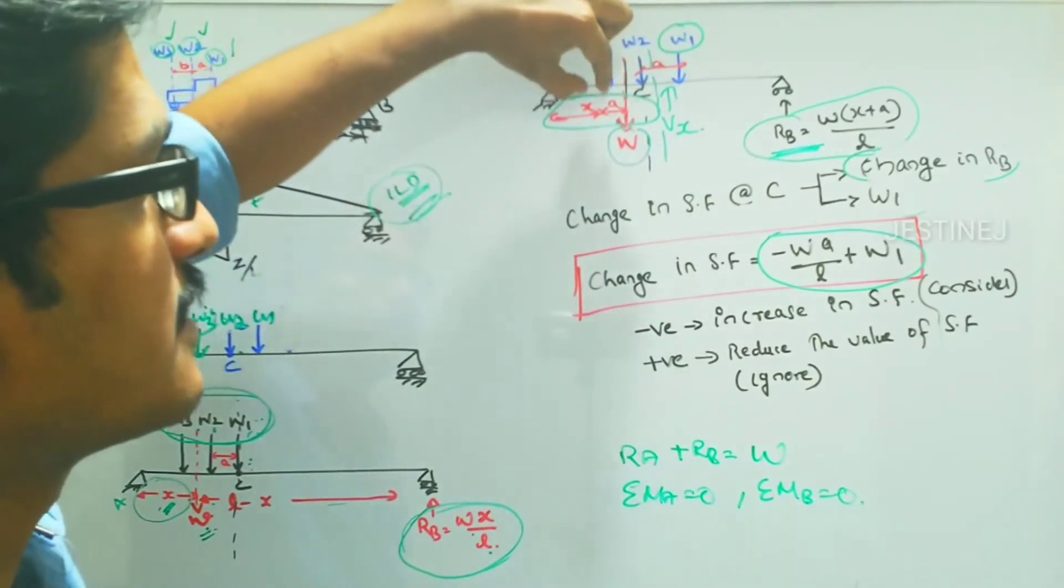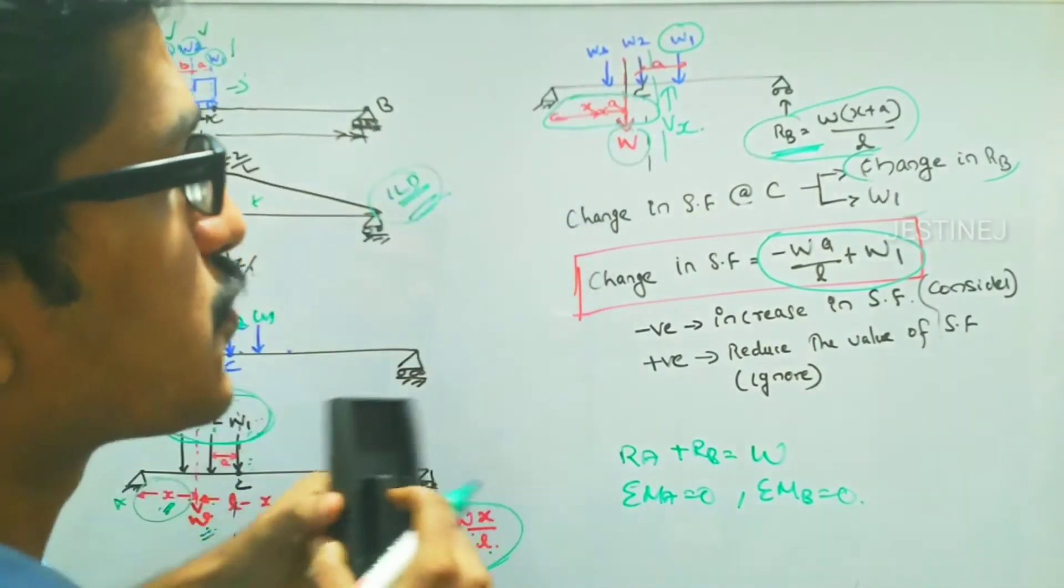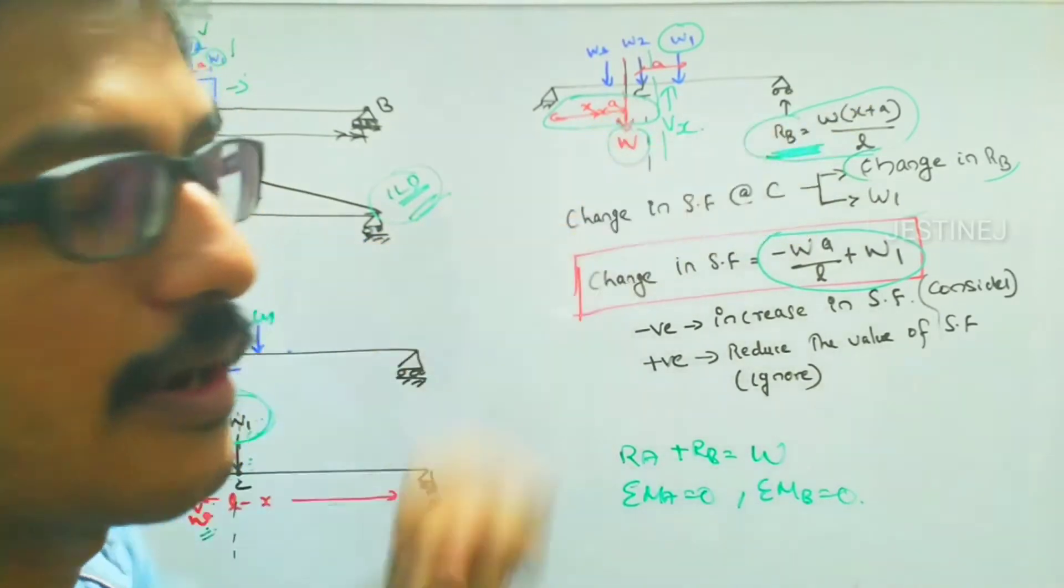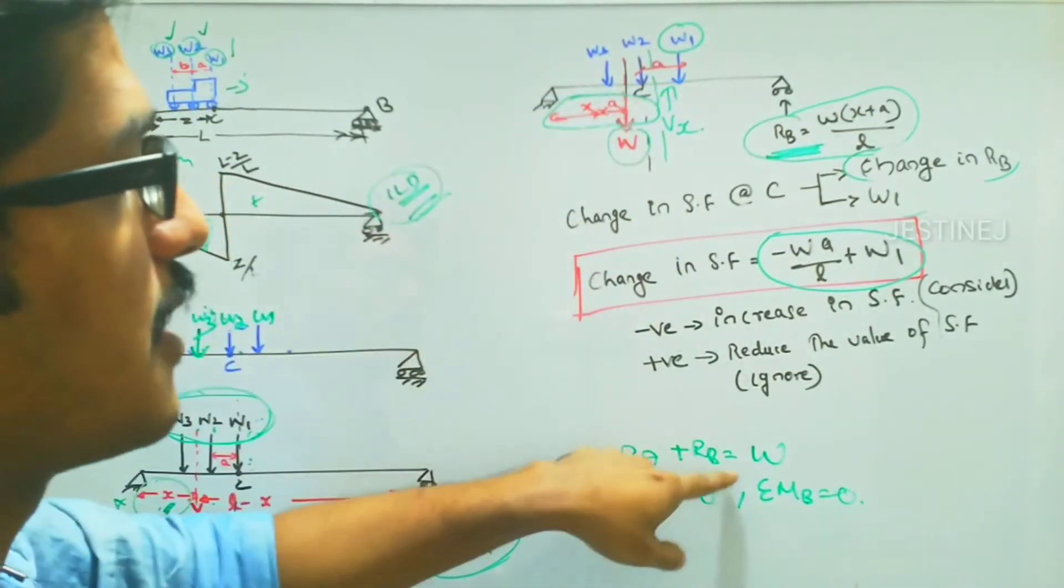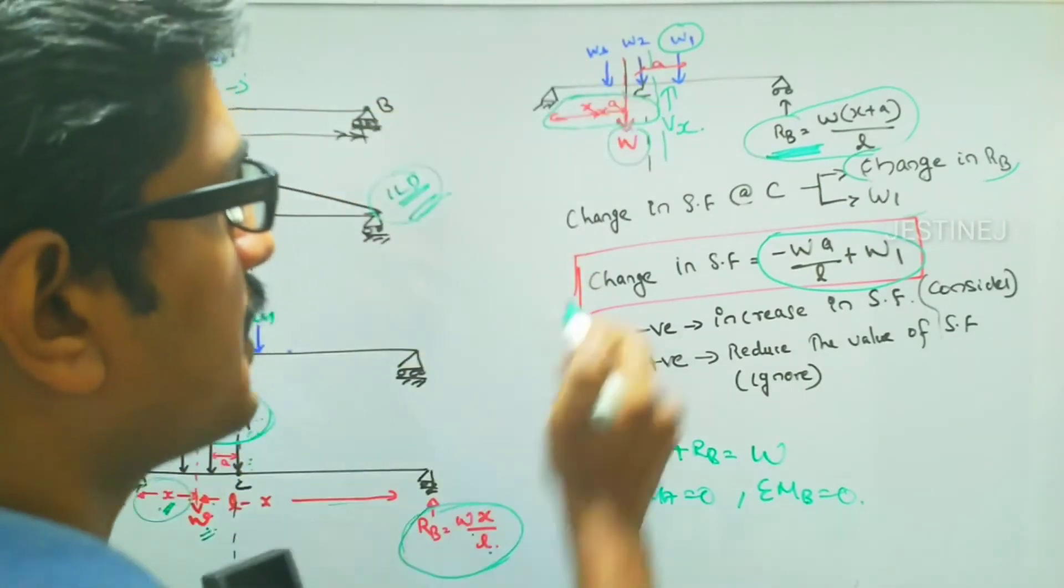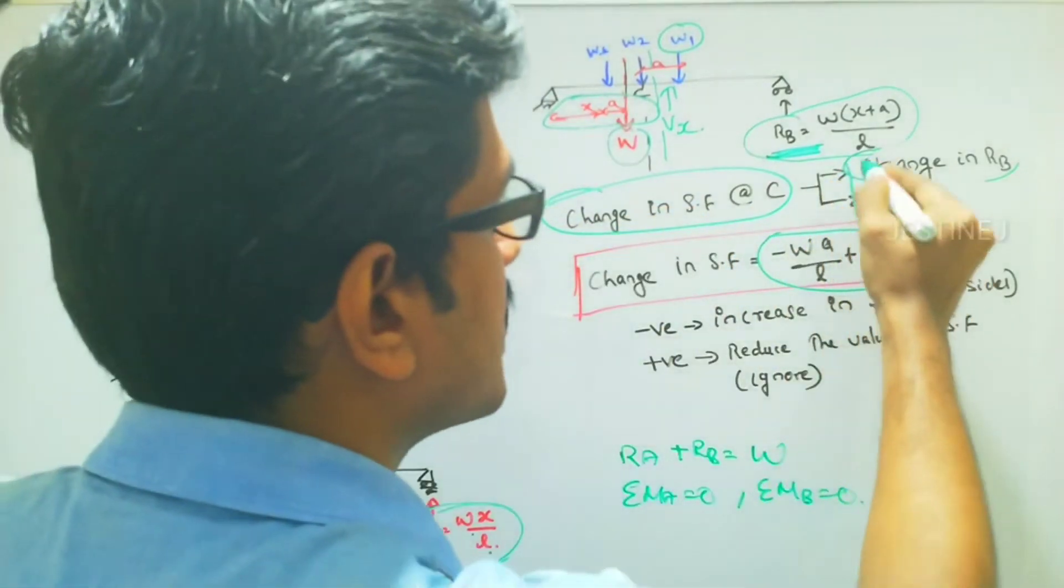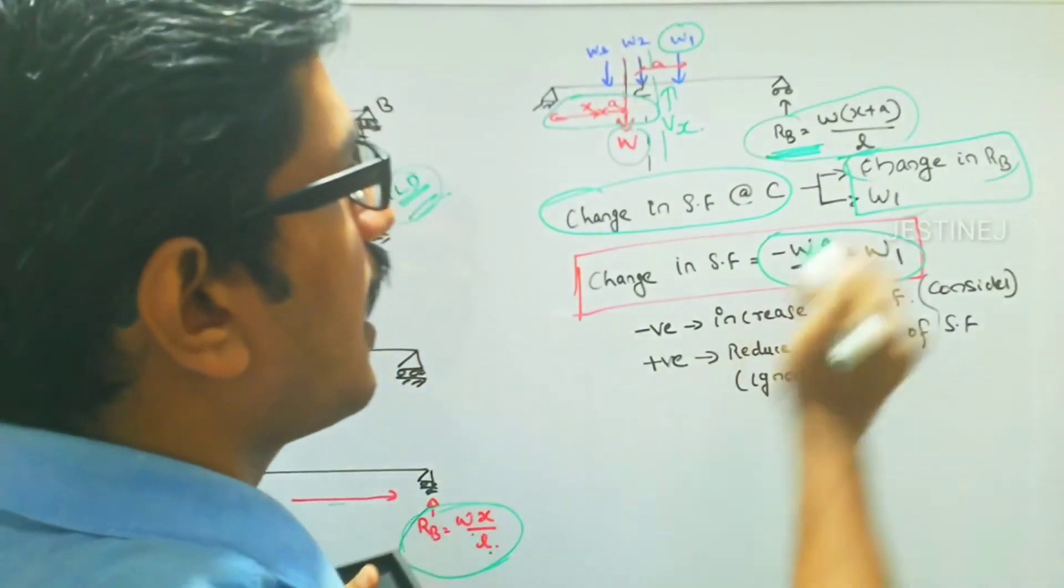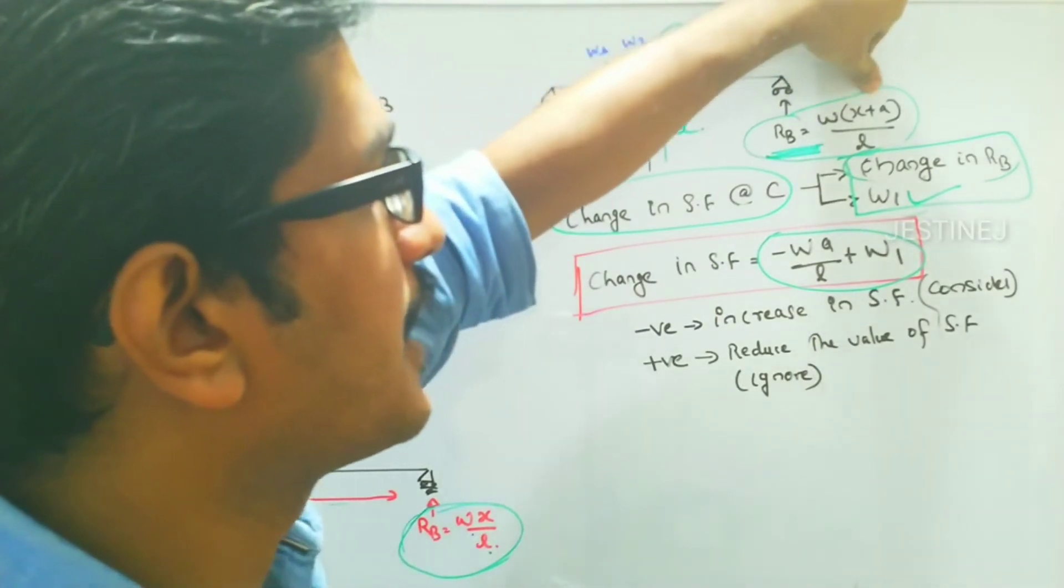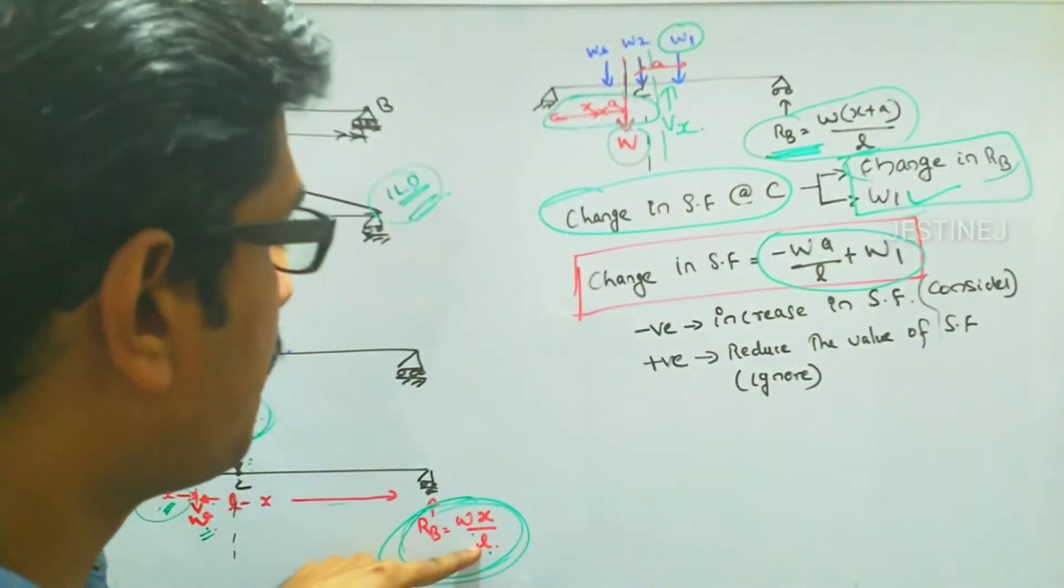Then after a point of time, W1 crosses the point C with a distance a. Then the capital W from this point also moves a distance a, so the reaction at B changes to W multiplied by x plus a by L. Or you can use the same equation Ra plus Rb equals W, but the distance will change to x plus a. Then what is going to happen? The changing shear force at the point C depends upon two values: change in Rb and also W1.